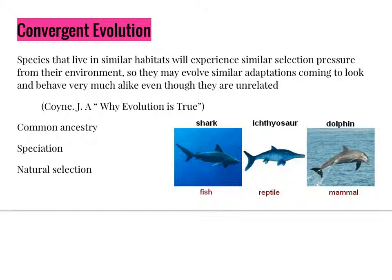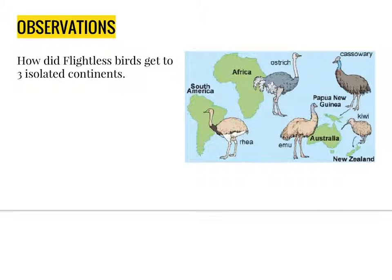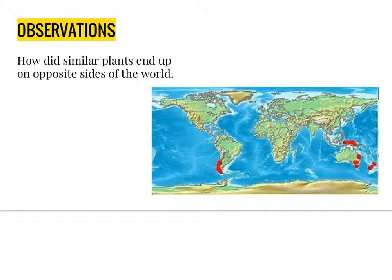Convergent evolution explains that species living in similar habitats will experience similar selection pressure from their environment, so they may evolve similar adaptations, coming to look and behave very much alike even though they are unrelated. Some components of convergent evolution are common ancestry, speciation, and natural selection. Other observations related to the distribution of species include the distribution of flightless birds like the ostrich, emu, and rhea, which are found on three different continents, and plants like the Glossopteris, whose fossils are found in parts of Africa, America, Antarctica, India, and Australia. How is this possible if the species are not capable of crossing large masses of water?